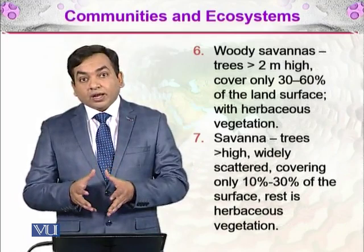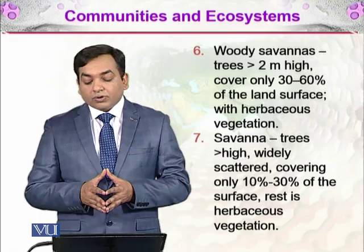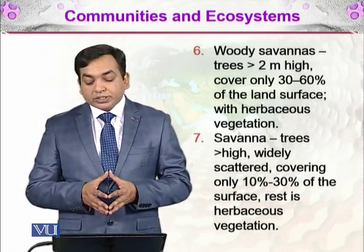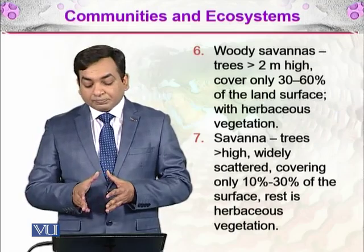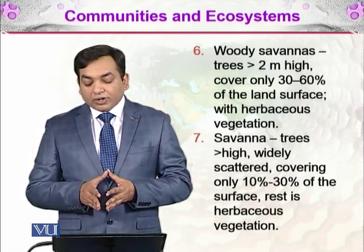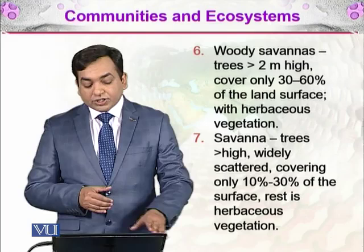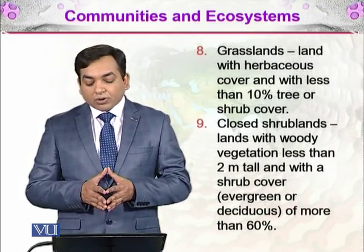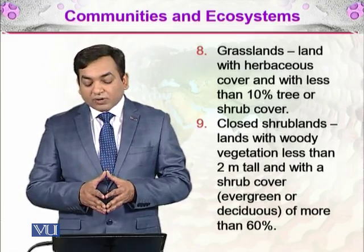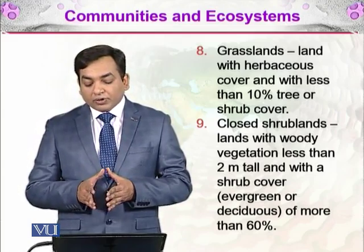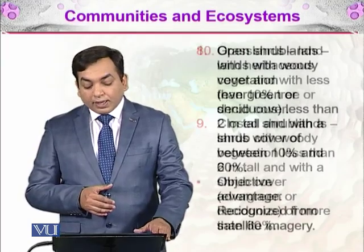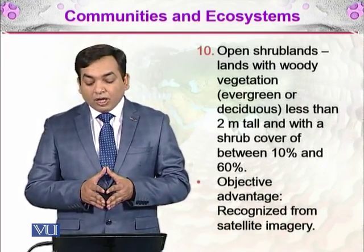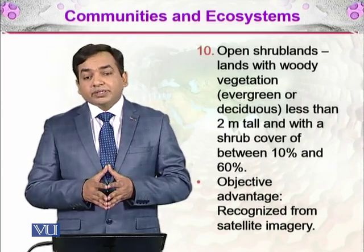Woody savannas have trees more than 2 meters high covering only 30 to 60% of the land surface, with herbaceous vegetation in between. Simple savannas contain fewer, widely scattered tall trees covering only 10 to 30% of the surface, with the rest being herbaceous vegetation. Grasslands have herbaceous cover with less than 10% tree or shrub cover. Closed shrublands have woody vegetation less than 2 meters tall with shrub cover of more than 60%. Open shrublands have woody vegetation — evergreen or deciduous — less than 2 meters tall, with shrub cover between 10% and 60%.